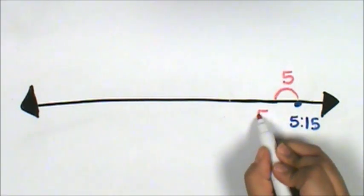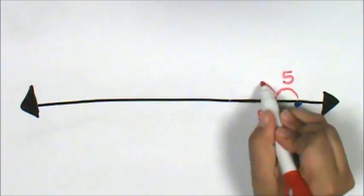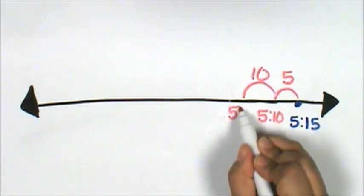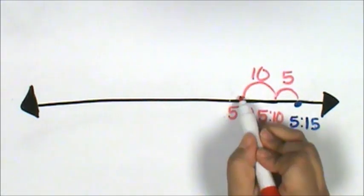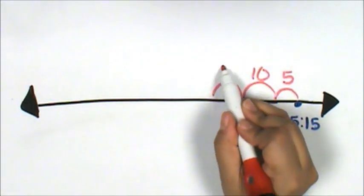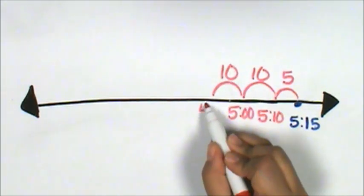5 minutes will be 5:10. 10 minutes will be 5 o'clock. 10 minutes will be 4:50.